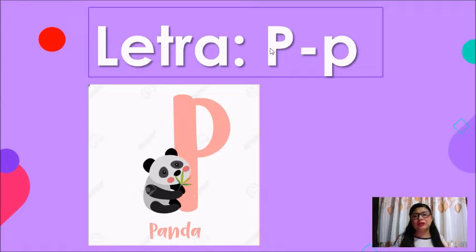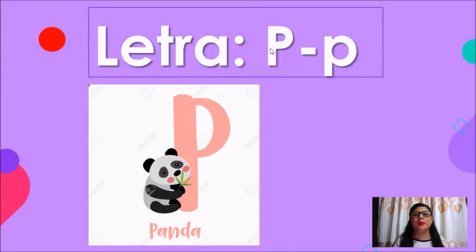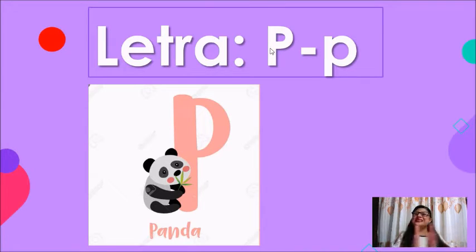Necesito que ahora tú lo hagas conmigo y lo intentes. Vamos a juntar un poquito los labios y vamos a hacer como si se tronara un globo. Fíjate bien: P, P, P. Hazlo conmigo, anímate: P, P, P. ¡Eso es! Lo estás haciendo súper, súper bien y estoy muy orgullosa de ti.